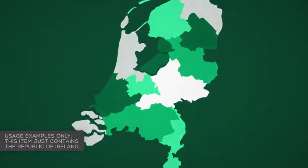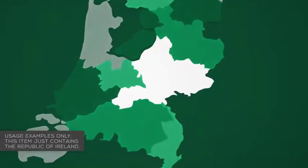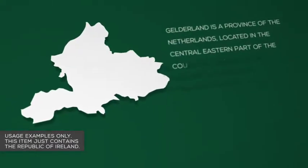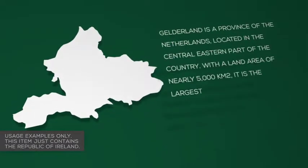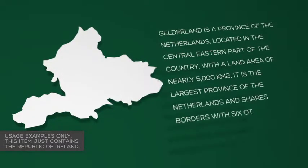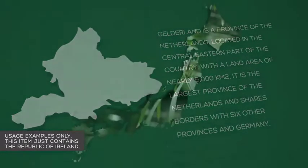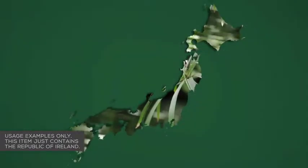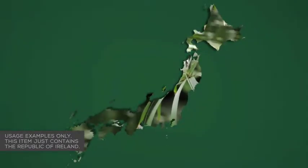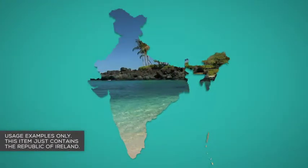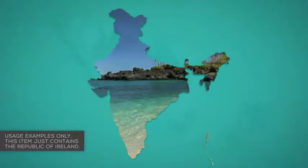Zoom in to regions of interest and hide the layers you don't need to focus on certain areas. Animate individual regions and add your own text and camera moves as required. Use your own content as a texture